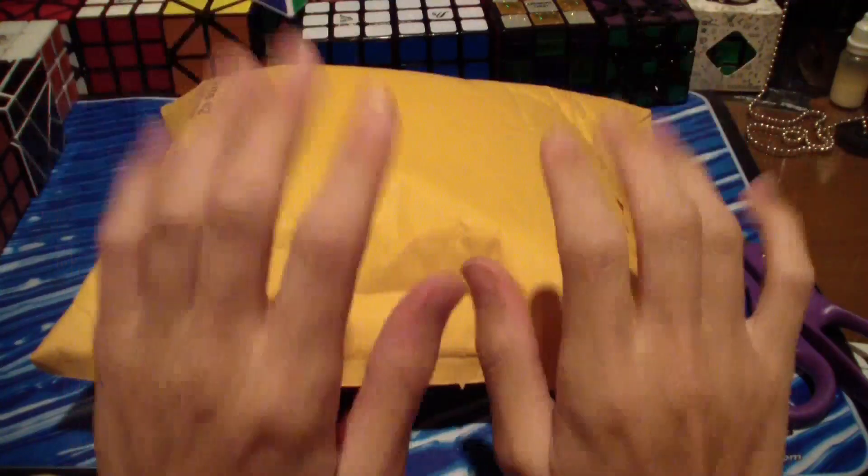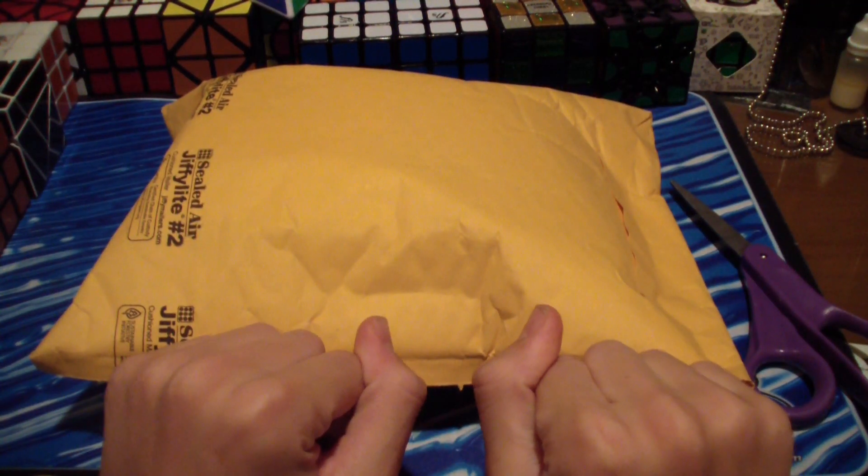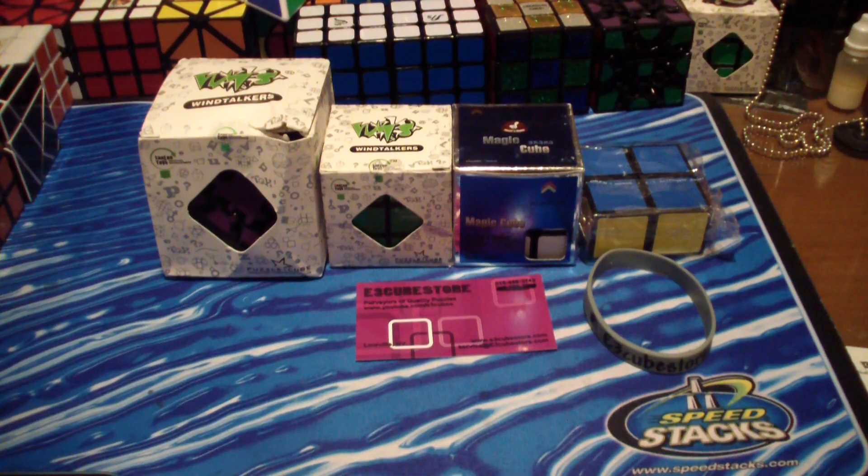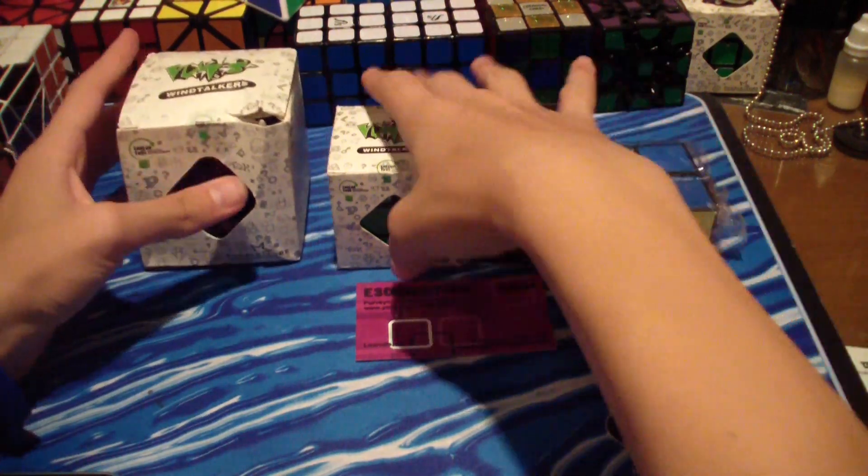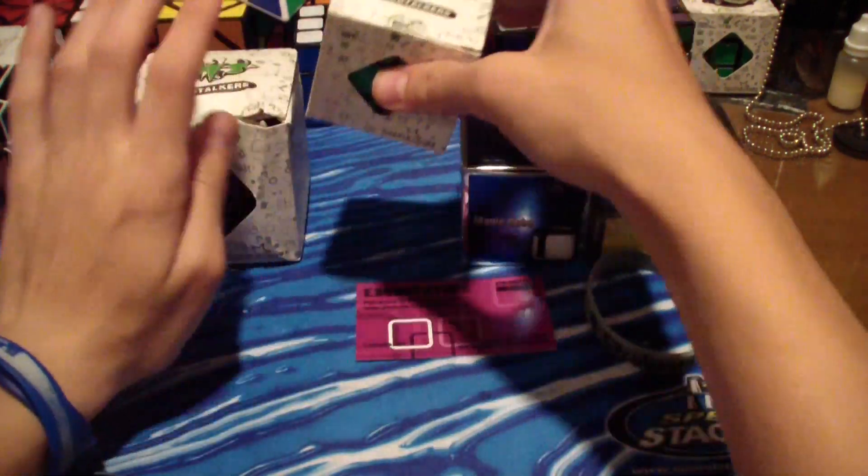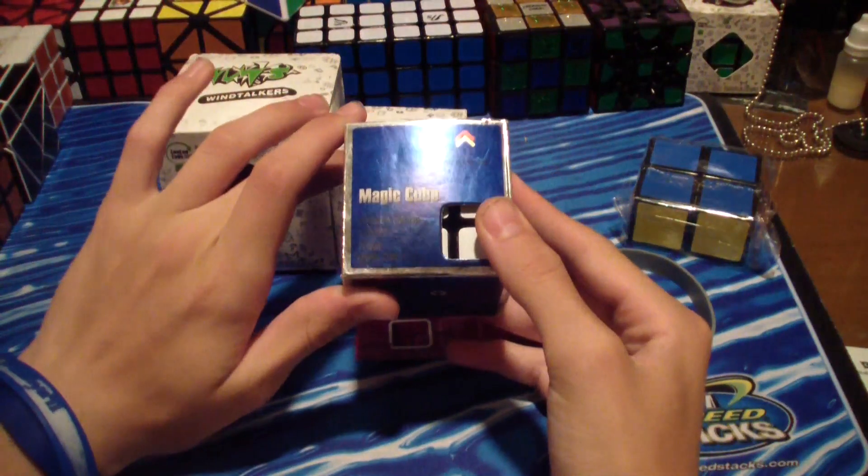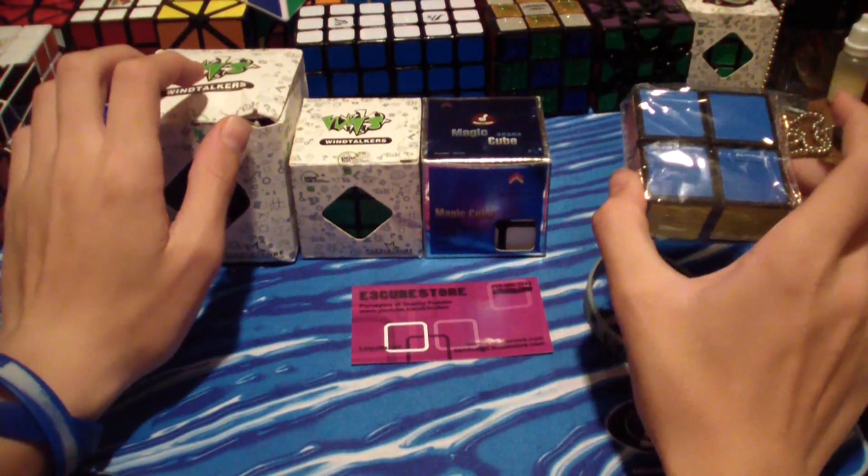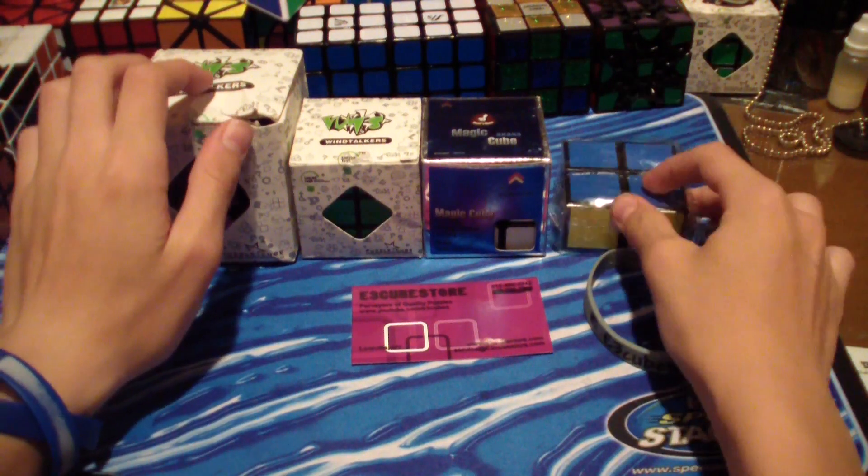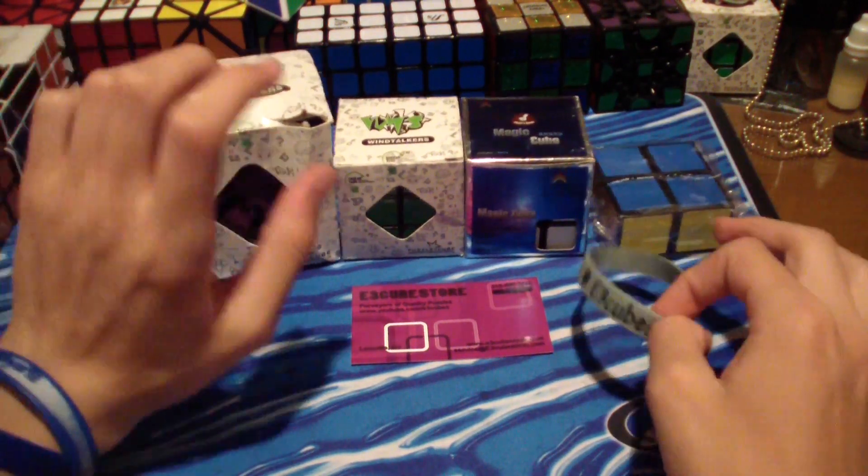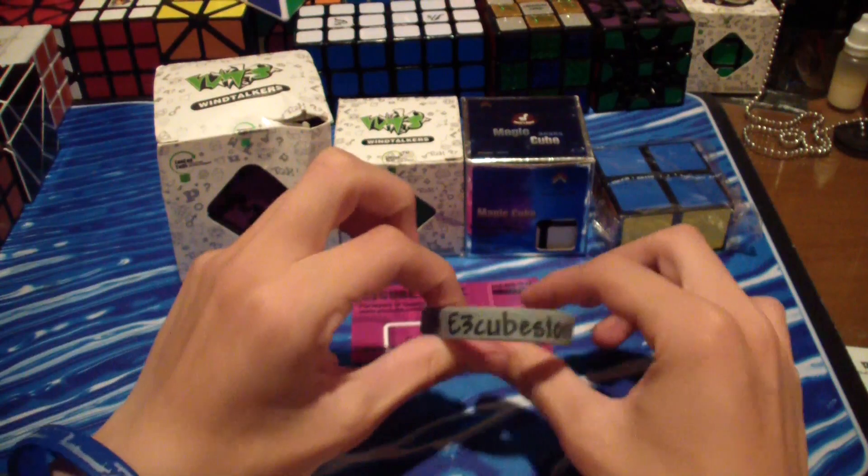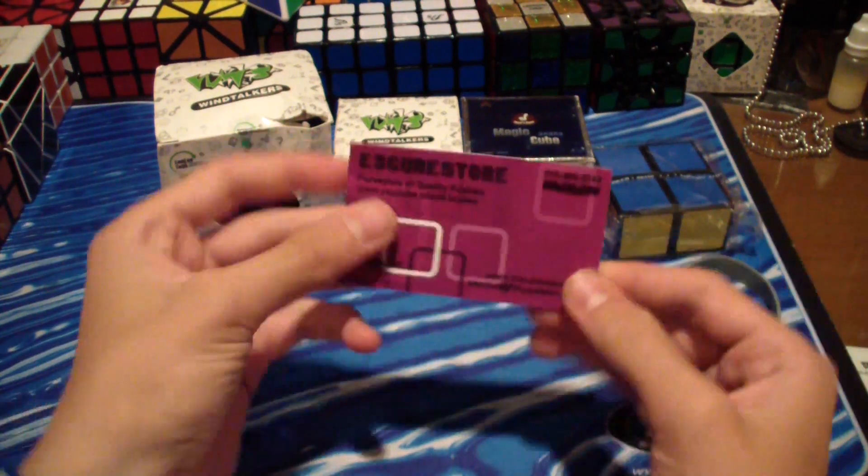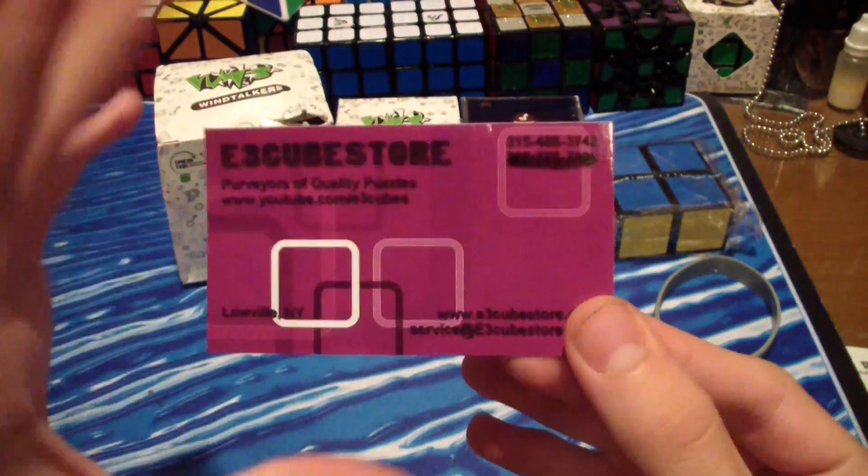Hey guys, the Cube Dude here. Today I have another unboxing from E3 Cube Store. In this package I got the Lan Lan Rhombic Dodecahedron, the Lan Lan 3x3x2, and the Mofang Feixuan. I got the Moyu 2x2x1 as a free puzzle since I'm an E3 Cubes member. I was also sent this wristband, so thanks Evan for that.